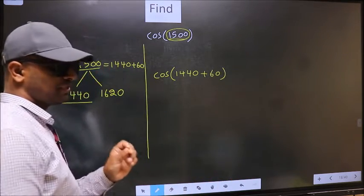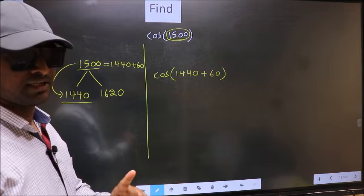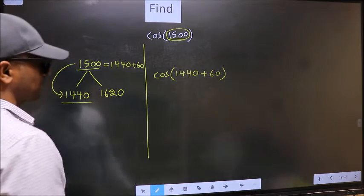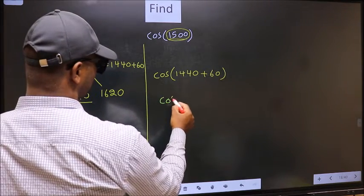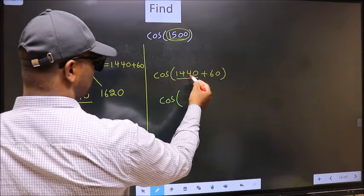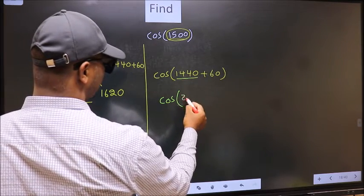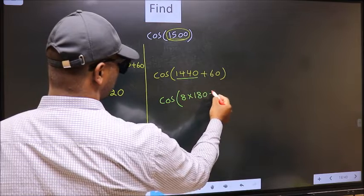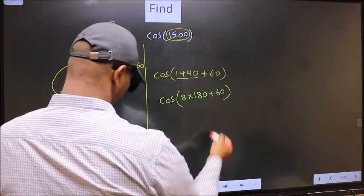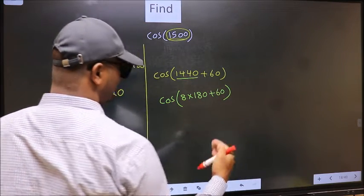This is step 1. Next, cos. Now in place of this, we should write 8 times 180 plus 60.